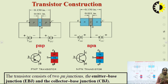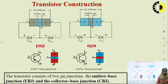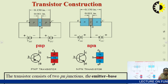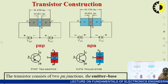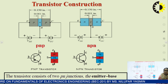A transistor can act as a switch or an amplifier. A simple PN junction diode acts as a switch: when forward biased it acts as an ON switch, when reverse biased it acts as an OFF switch. A transistor has two junctions and three terminals — it is a two-junction, three-terminal device where semiconductors are arranged in a PNP or NPN configuration.